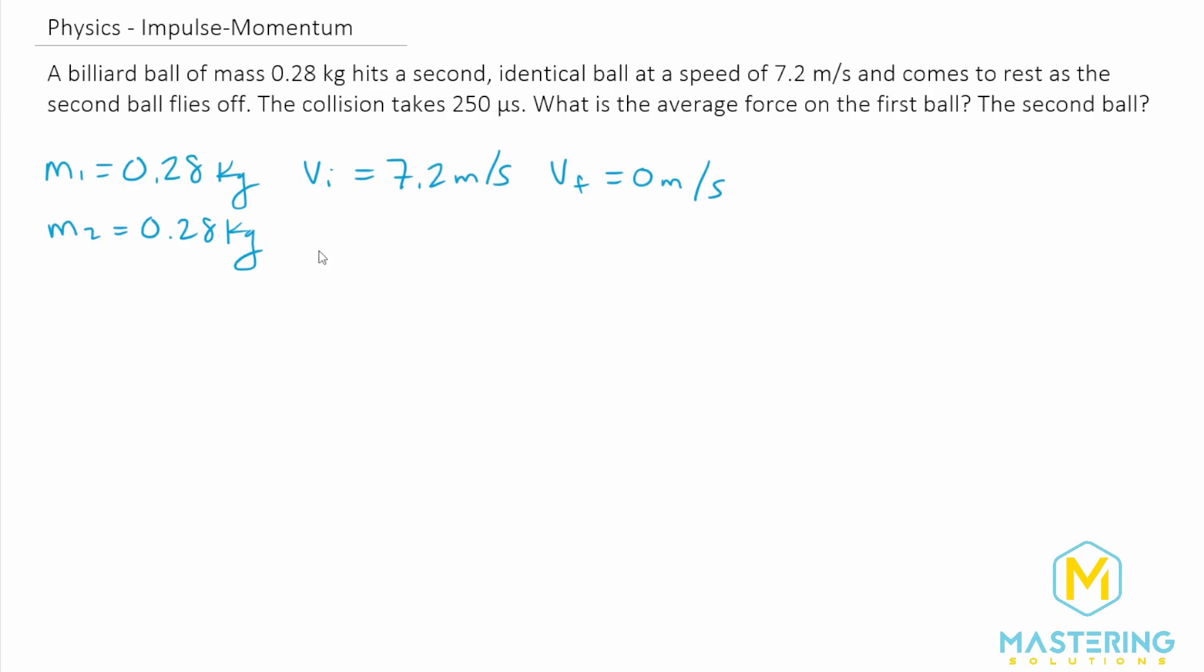They say that the collision takes 250 microseconds. So delta T is going to be 250 microseconds. Now there's a few ways that we can write this. You can, of course, move the decimal places over six places for micro. So that would give us 0.000250 seconds. And that's correct.